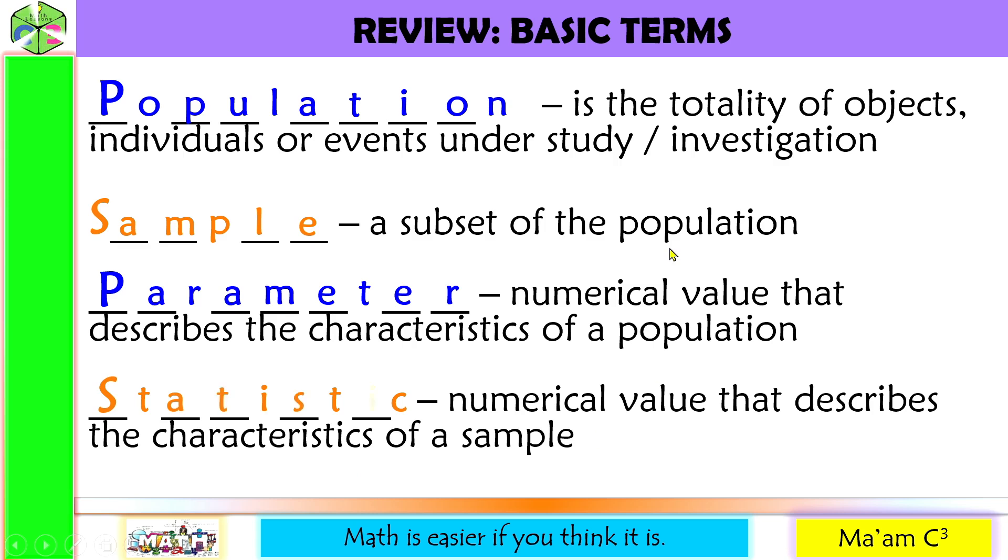Notice that I use the same colors for population and parameter, as well as for sample and statistic. And also, I emphasize the first letter of the words. So, if the data is about population, we call it parameter. If the data is about sample, we call it statistic.